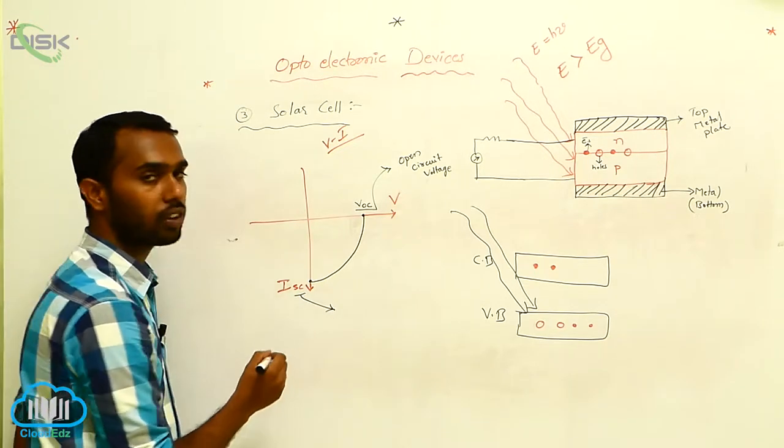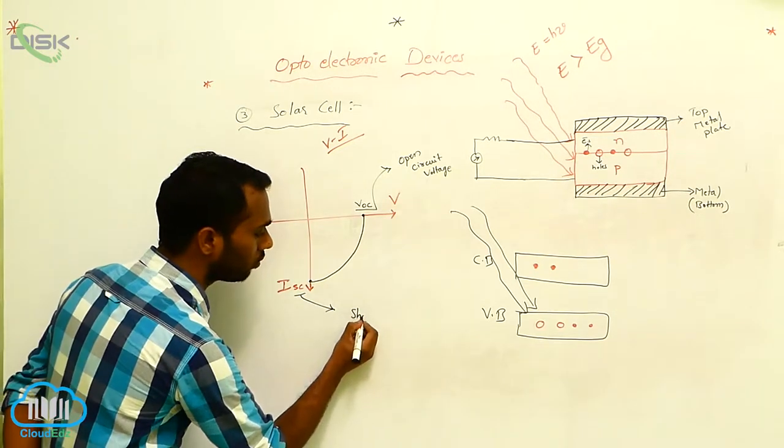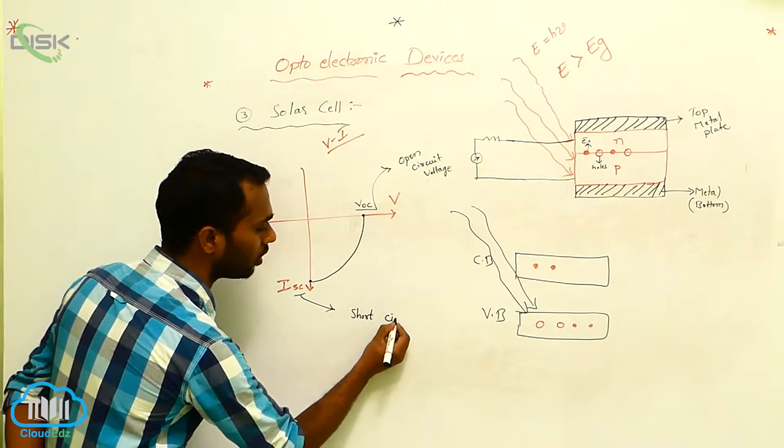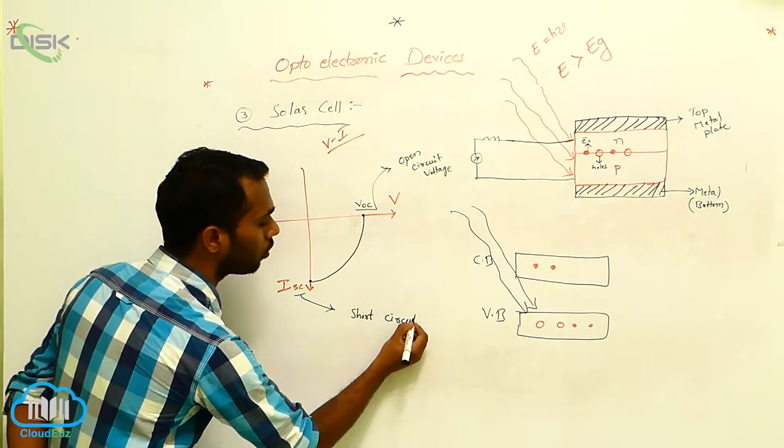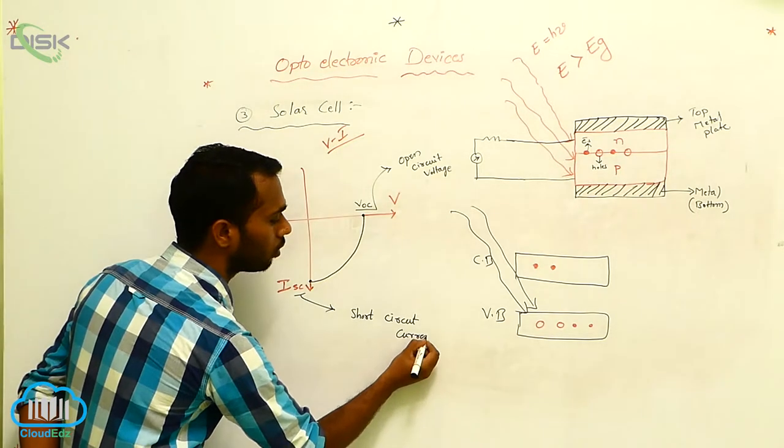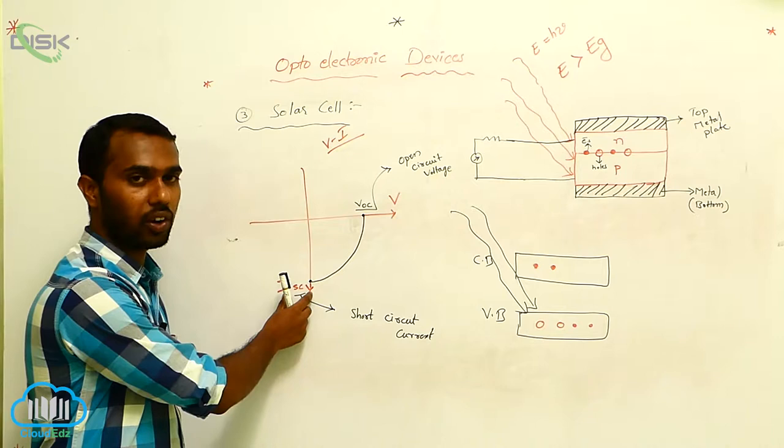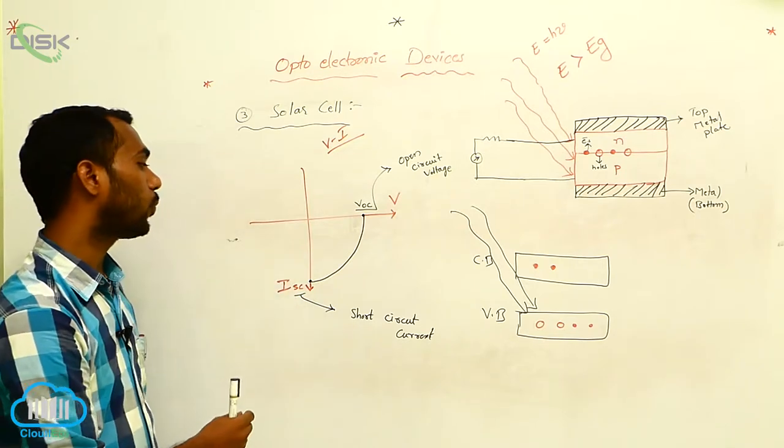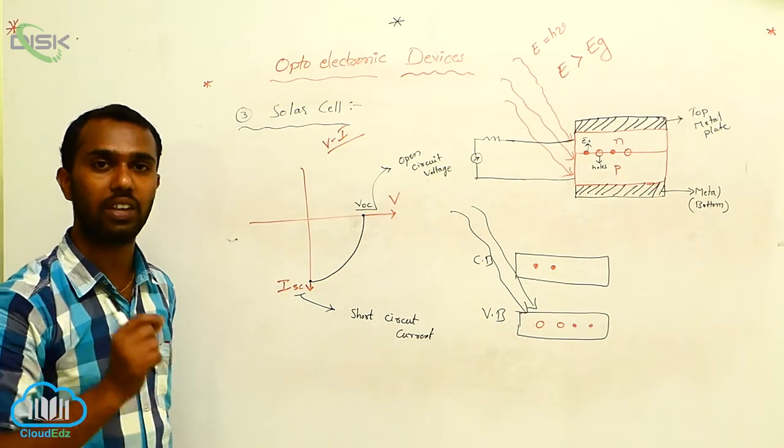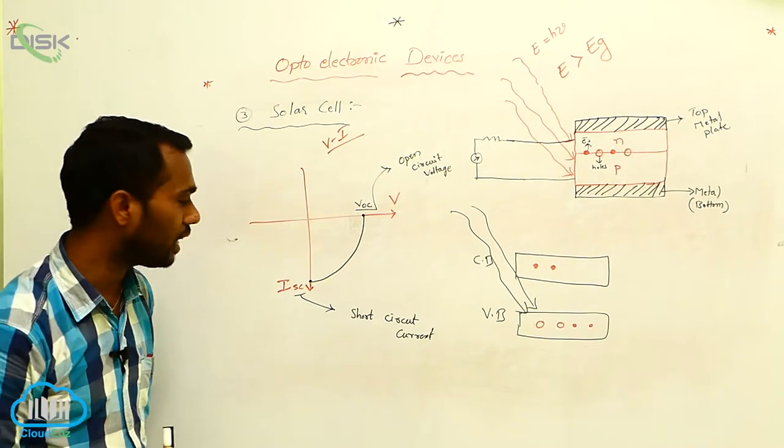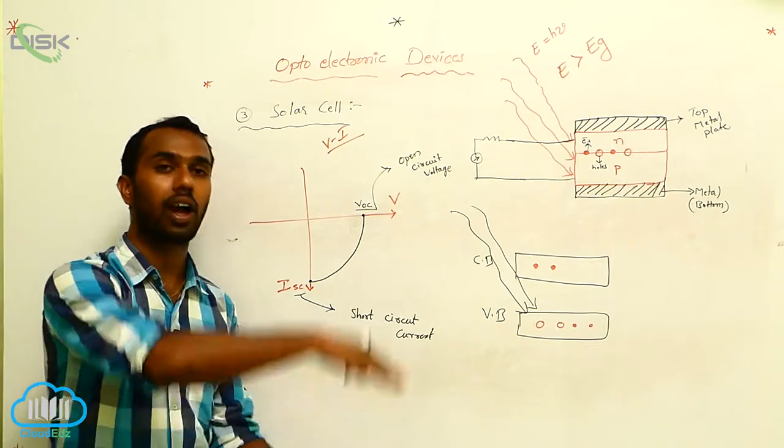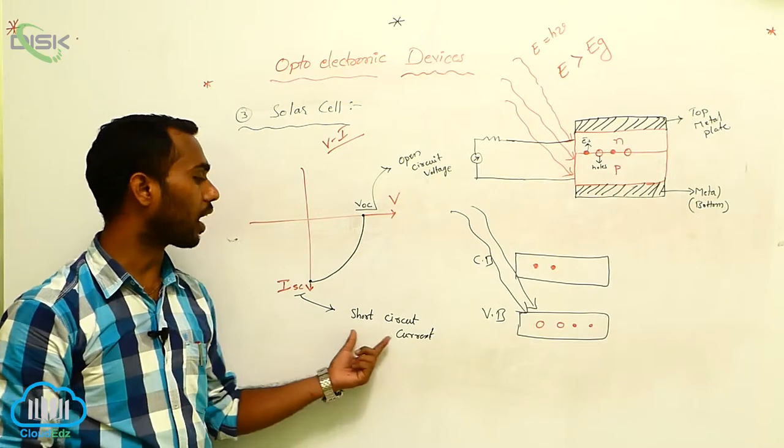ISC stands for short circuit current. When we say short circuited, if resistance is very very small, current becomes maximum. That maximum current is called the short circuit current.